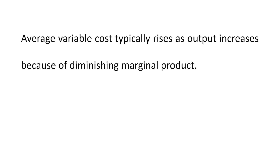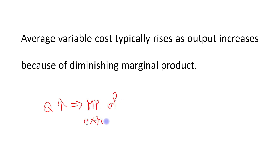Average variable cost typically rises as output increases because of diminishing marginal product of variable factors, just like labor. As you hire more and more workers, the marginal product of an extra worker decreases — the contribution of the extra worker towards production diminishes. That is the reason why when output increases, the marginal product of the extra worker declines, and as a result average variable cost increases.